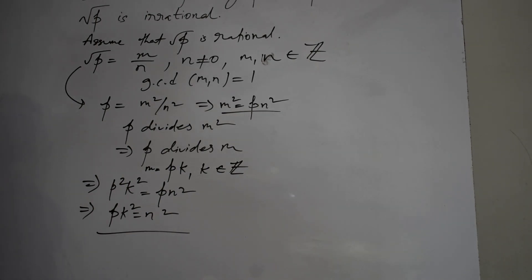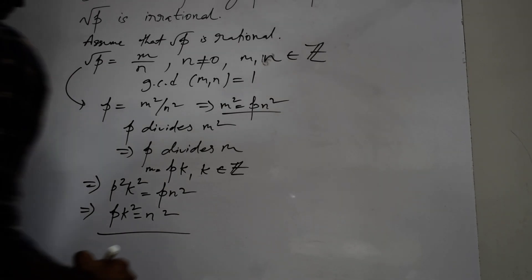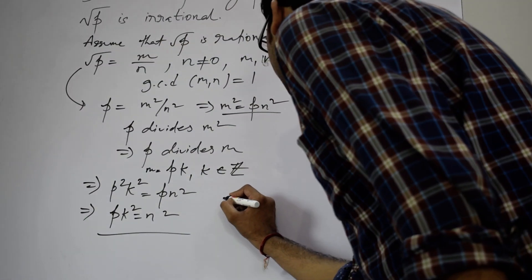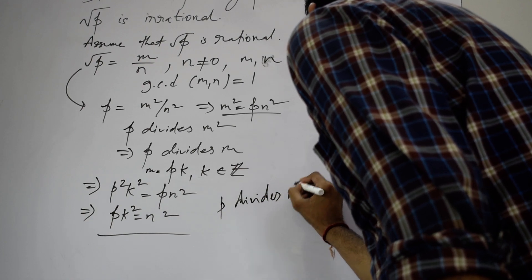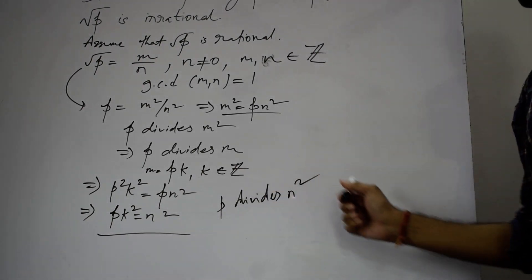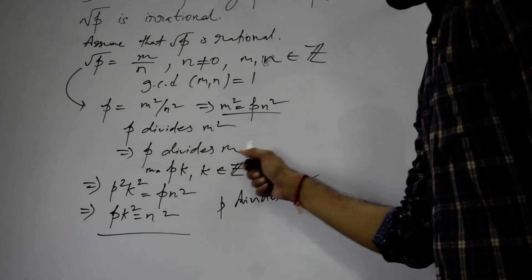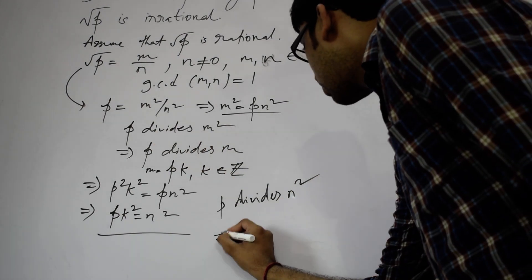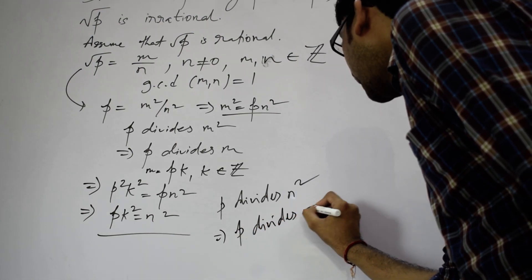Now from here, again we see that n squared is p times the square of an integer. It means that p is a factor of n squared; in other words, p divides n squared. Now again, since p is prime and p divides n squared, by the property already discussed, it follows that p divides n.